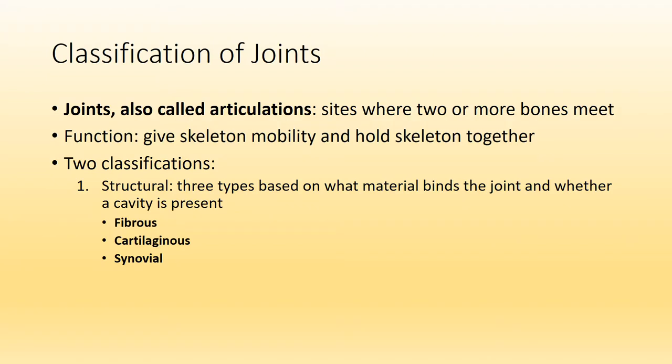First off, what is a joint? You may also hear it referred to as an articulation, but either way they will be a site where two or more bones come together. Joints belong to the skeletal system and they give the skeleton its mobility, but they also bind bones together. Certain joints you may be familiar with where you can think of mobility would be the knee joint or the shoulder joint.